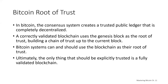When designing a complex Bitcoin application that consists of services and many different systems, you should carefully examine the security architecture in order to ascertain where the trust is being placed. Ultimately, the only thing that should be explicitly trusted is a fully validated blockchain. If your application explicitly or implicitly vests trust in anything but the blockchain, that should be a source of concern because it introduces vulnerability.